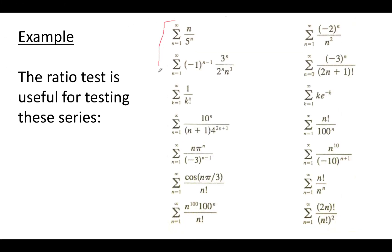Here are a couple of cases when the ratio test is useful and can be applied. For example, whenever we have an expression like a constant to the n, as in that first example, or whenever a factorial is somehow involved in the summation, then usually the ratio test will be useful and helpful.